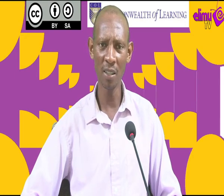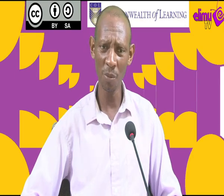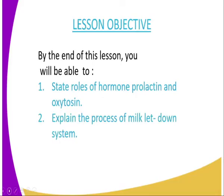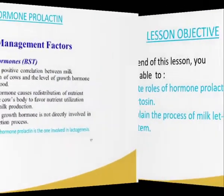We have the lesson objectives. By the end of this lesson, you should be able to: number one, state the roles of hormones prolactin and oxytocin; and number two, explain the process of the milk letdown system.